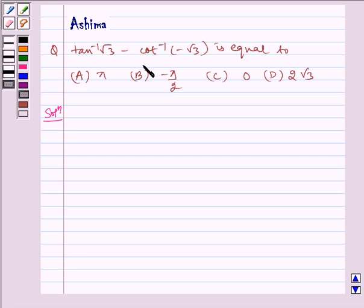We have tan inverse root 3 minus cot inverse of minus root 3 is equal to: (A) pi, (B) minus pi by 2, (C) 0, (D) 2 root 3.